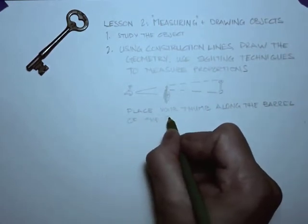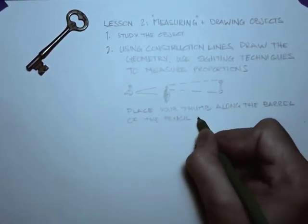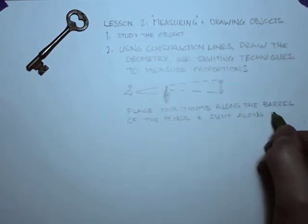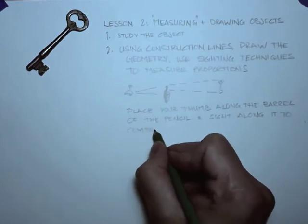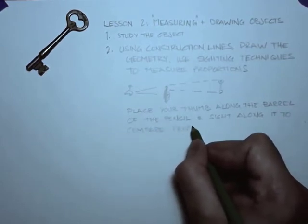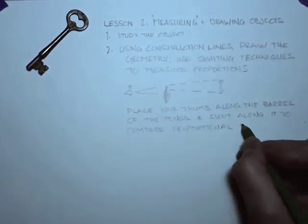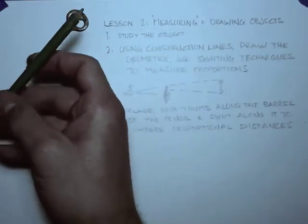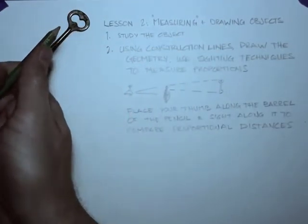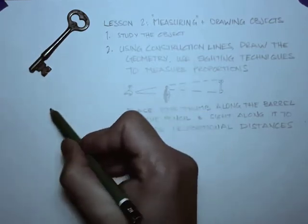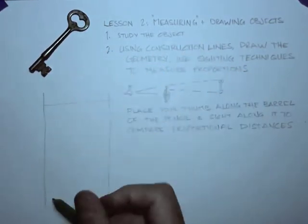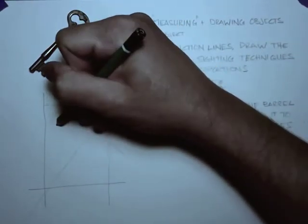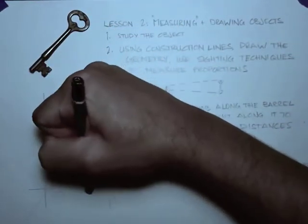Use your thumb along the barrel of the pencil—that's the easiest way to take a quick measurement by eye and then translate that measurement onto your page. It doesn't have to be exact. Remember we have a bounding box, we have some wiggle room in the drawing. Just start drawing but use these proportional relationships to keep your drawing accurate.